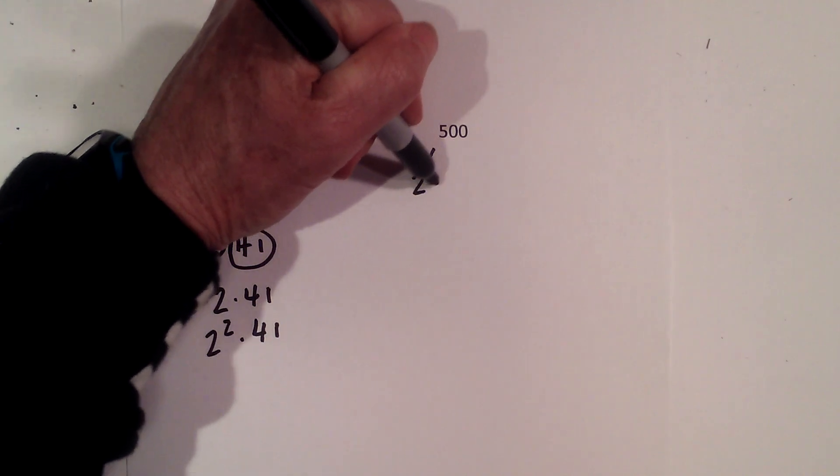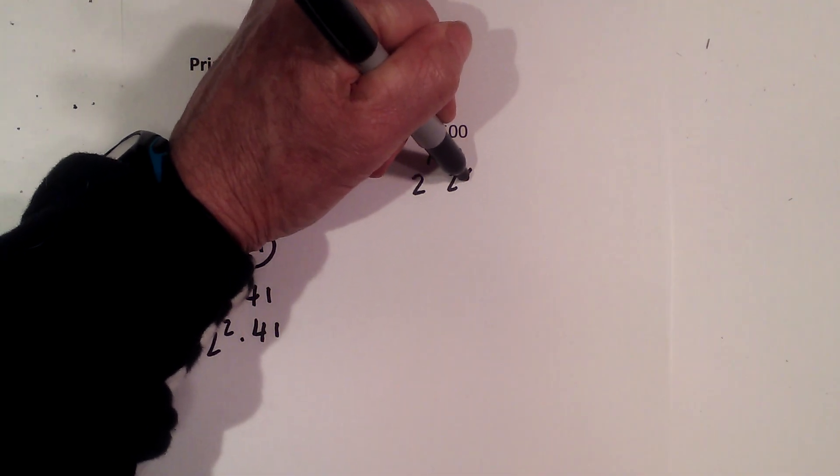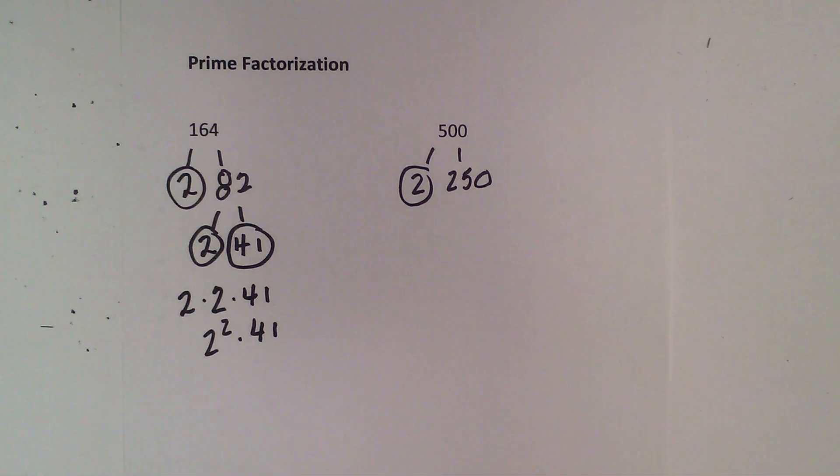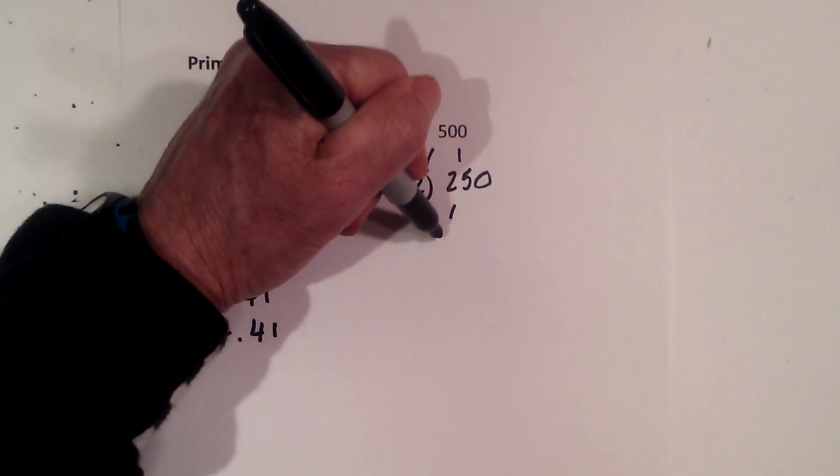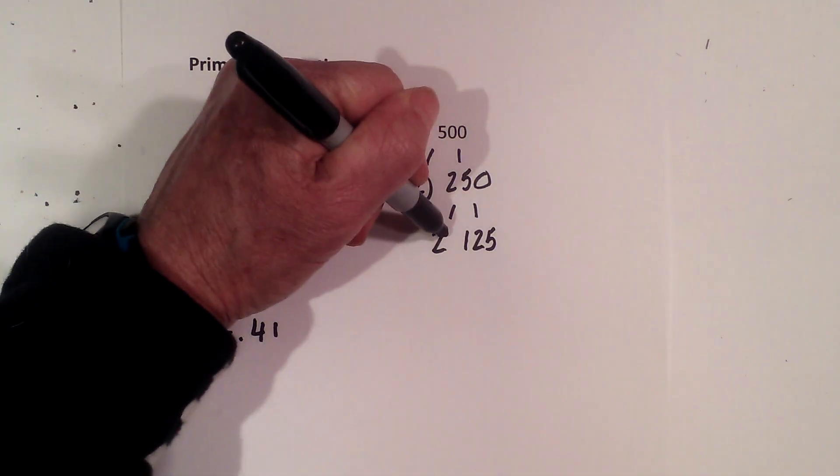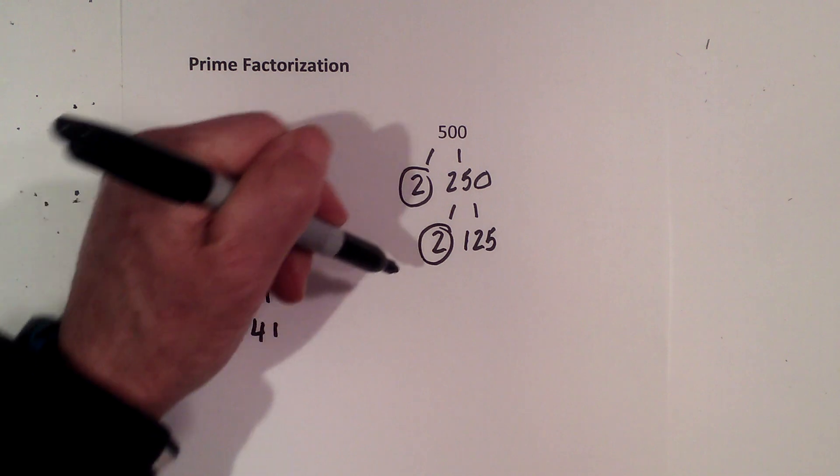First, 2 times 250 equals 500. Circle the 2 because it is prime. Now, 2 times 125 equals 250. Circle the 2 because it is prime.